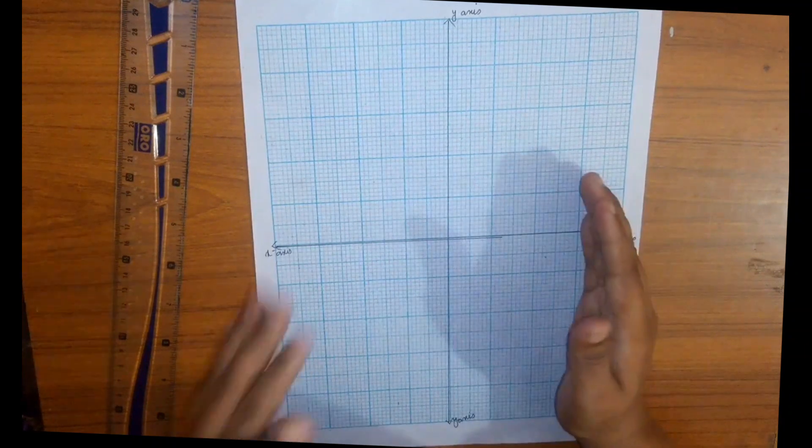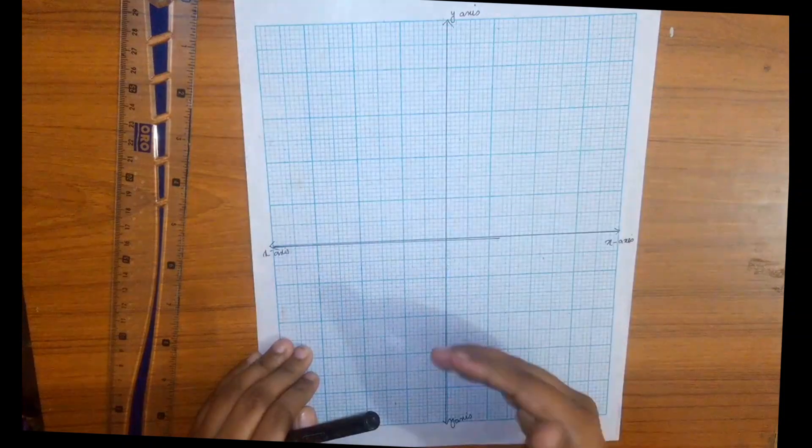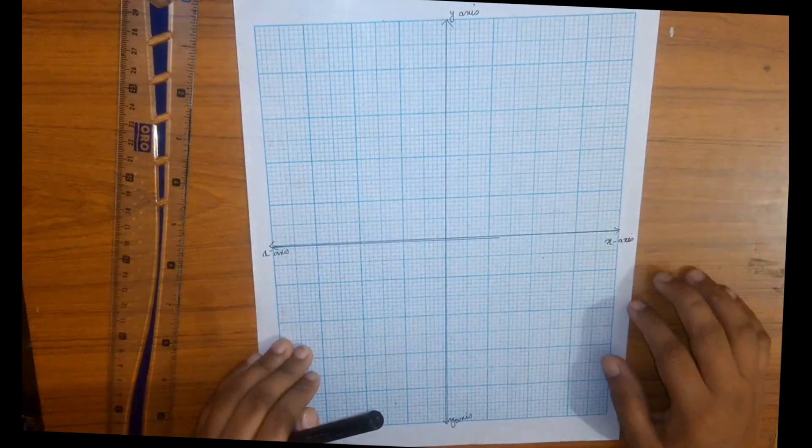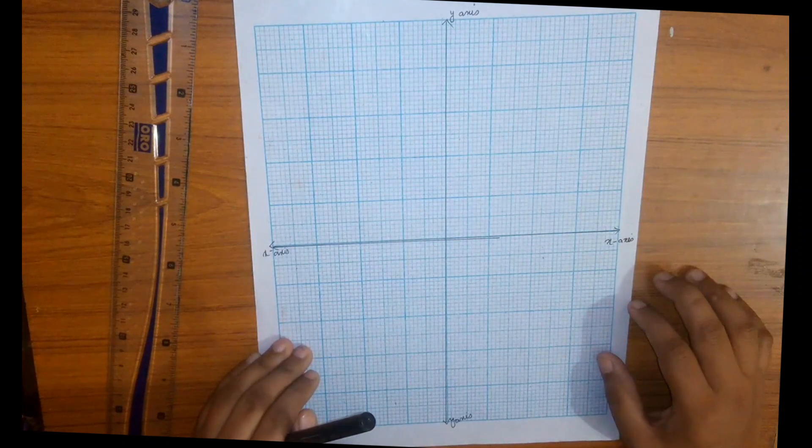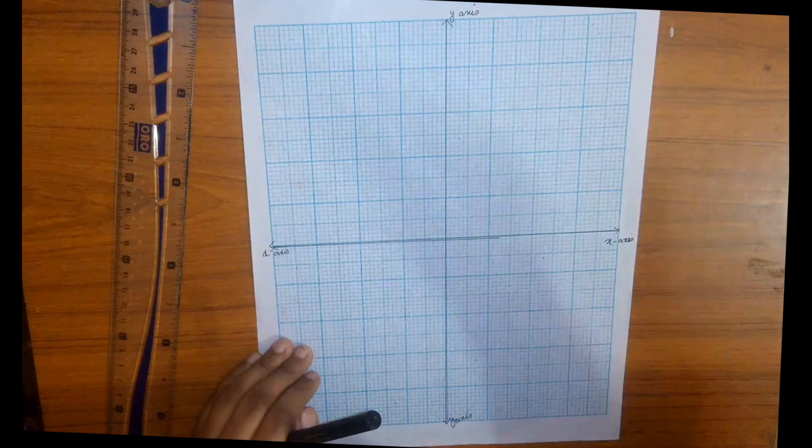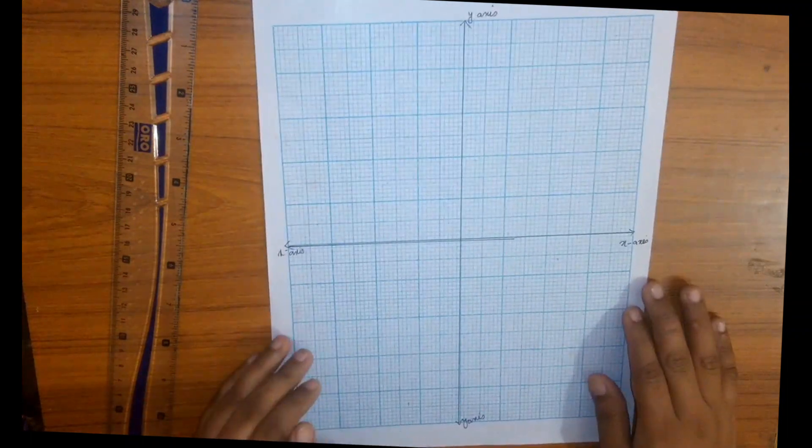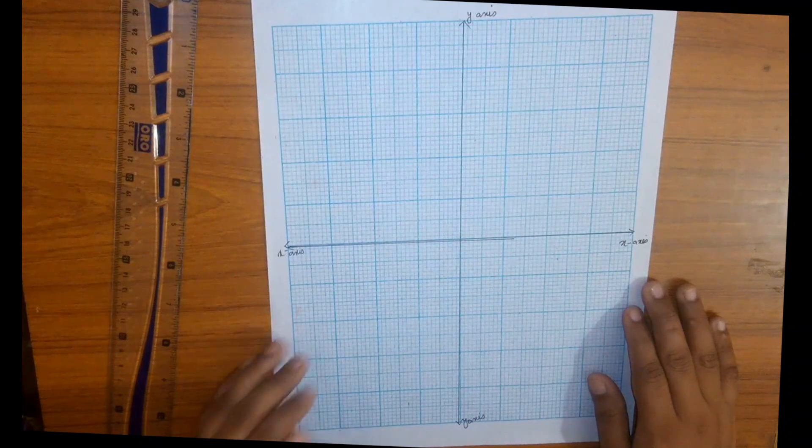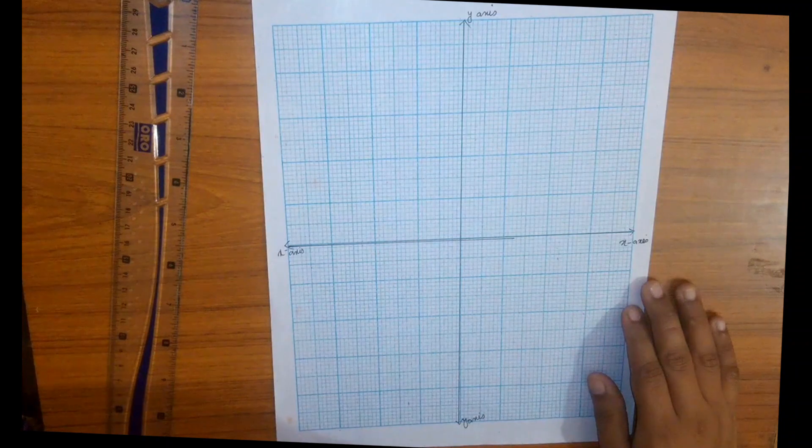The horizontal axis is known as the x-axis, which contains independent variable values. The vertical axis is known as the y-axis, which we can consider for dependent variables.